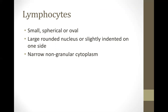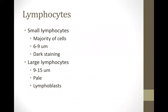The parenchyma of lymphatic tissue is lymphocytes, described as having small spherical or oval shapes with a large rounded nucleus, or slightly indented on one side. They have narrow non-granular cytoplasm and are categorized as agranular lymphocytes or agranular WBCs. Small lymphocytes are dark staining, ranging from 6 to 9 micrometers, and are the majority of lymphocytes in the body.